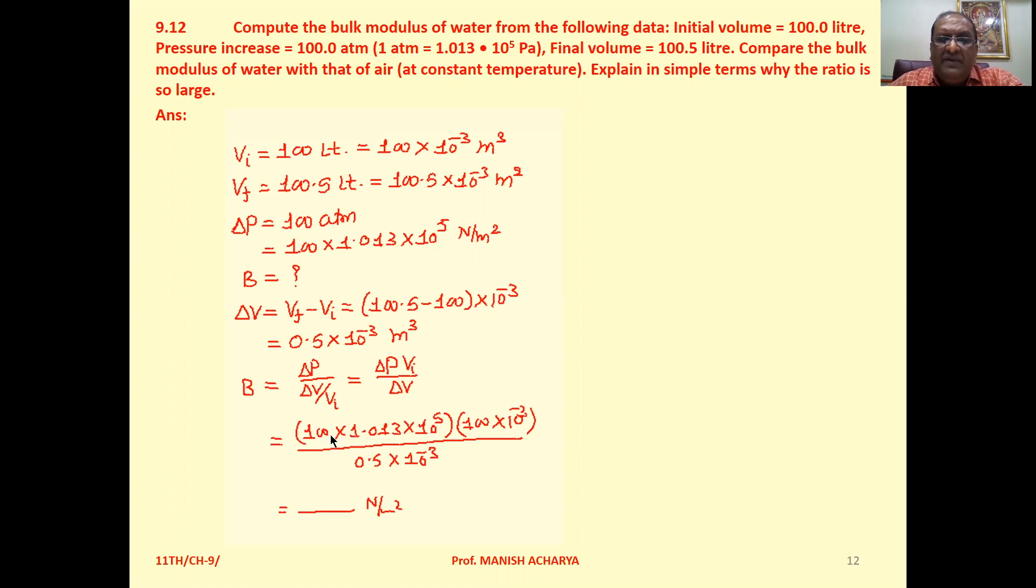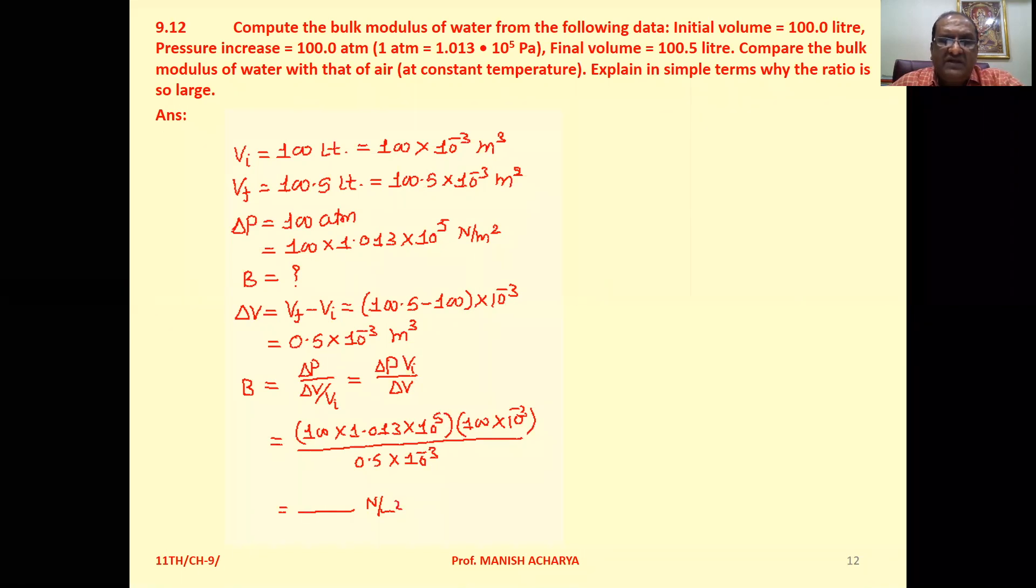Substitute the values: delta P equals 100 times 1.013 times 10 raised to 5, V_i equals 100 times 10 raised to minus 3, upon delta V equals 0.5 times 10 raised to minus 3.